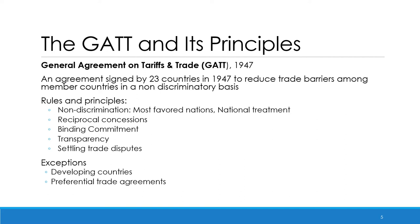Now let's turn to the GATT. The GATT stands for the General Agreement on Tariffs and Trade. It was intended to be a part of the International Trade Organization, which was intended to represent the third arm of the Bretton Woods institutions that aimed at trade liberalization. However, the ITO was never created. Only the GATT part was agreed upon by 23 countries who signed this agreement in 1947 to reduce trade barriers among member countries on a non-discriminatory basis. The GATT system reflects the US-UK approaches as a rules-based system with specific commitments by member countries in an attempt to liberalize trade.